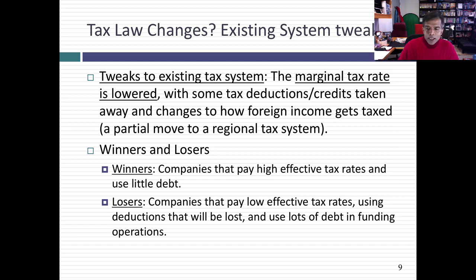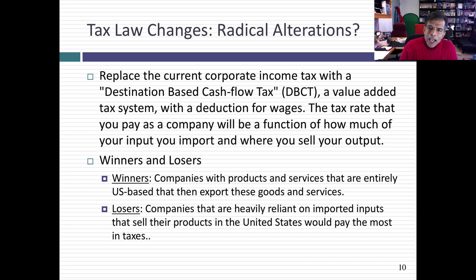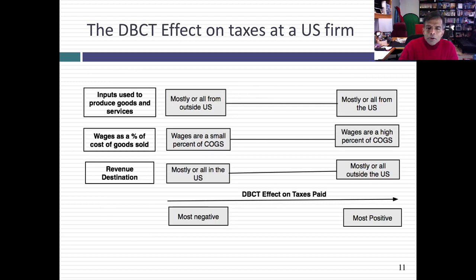There is a more radical change being talked about — something we've never seen in the U.S. corporate tax code before — called a destination-based cash flow tax, or DBCT. It's really a value-added tax. What it will effectively do is replace the tax on income with a tax on goods and services. The tax rate you pay as a company will vary depending on three things: where you get your inputs, whether wages are a big part of your cost of goods sold, and where you sell your output.